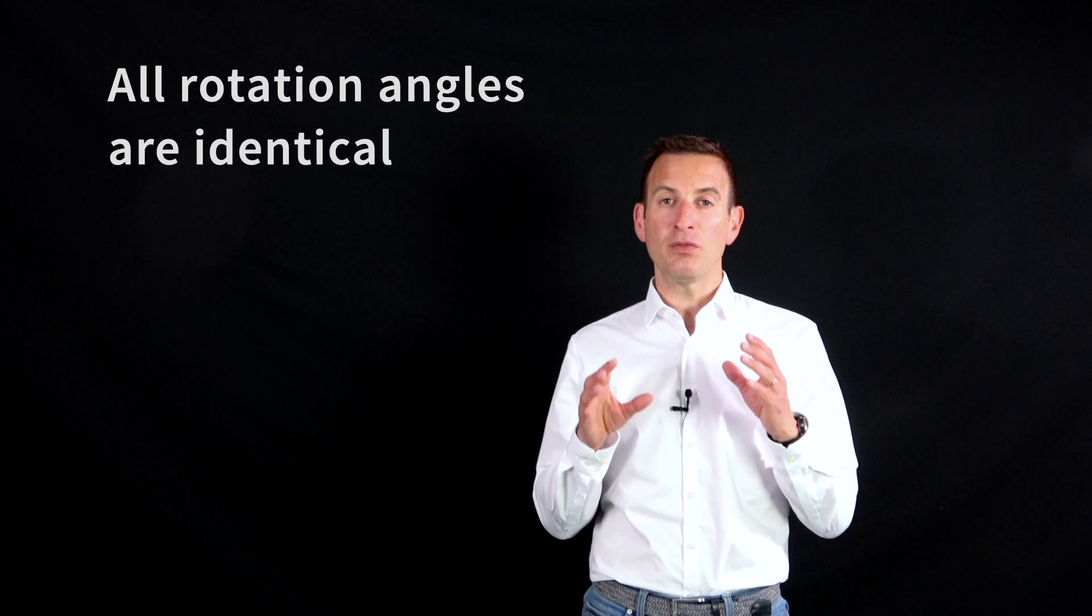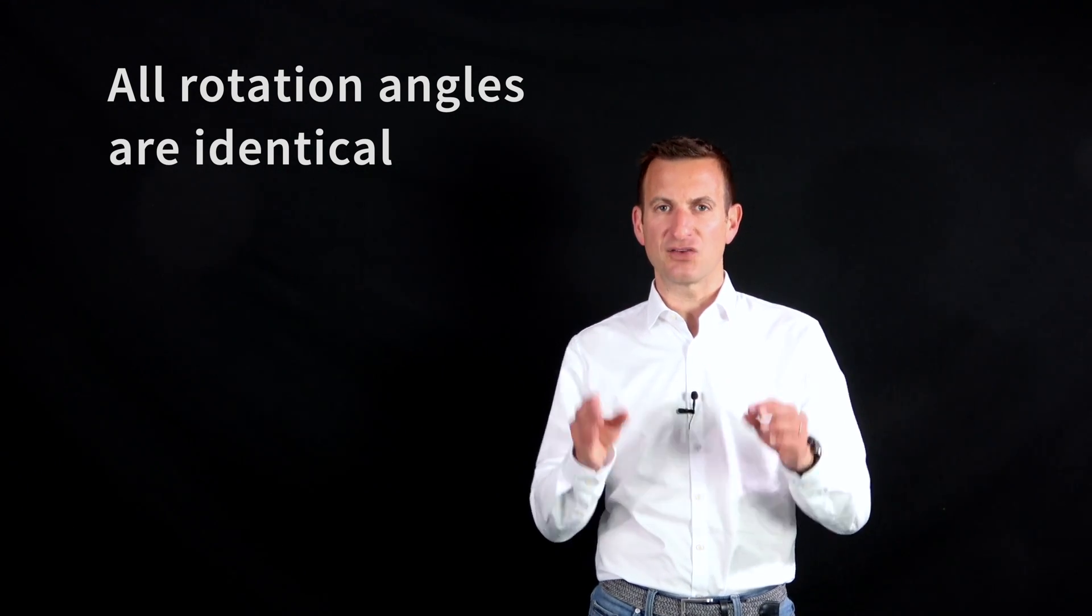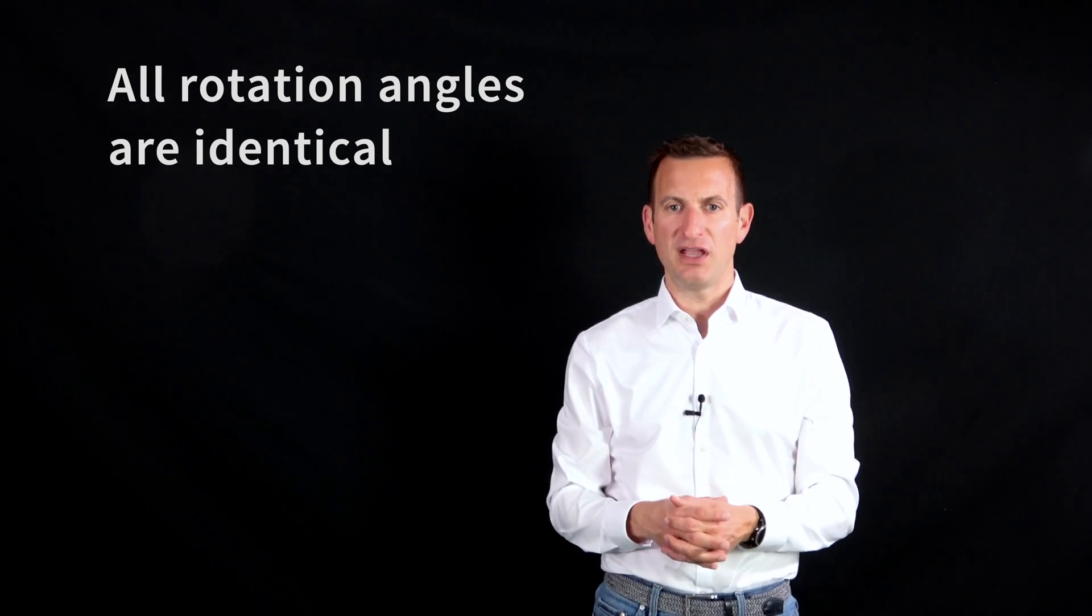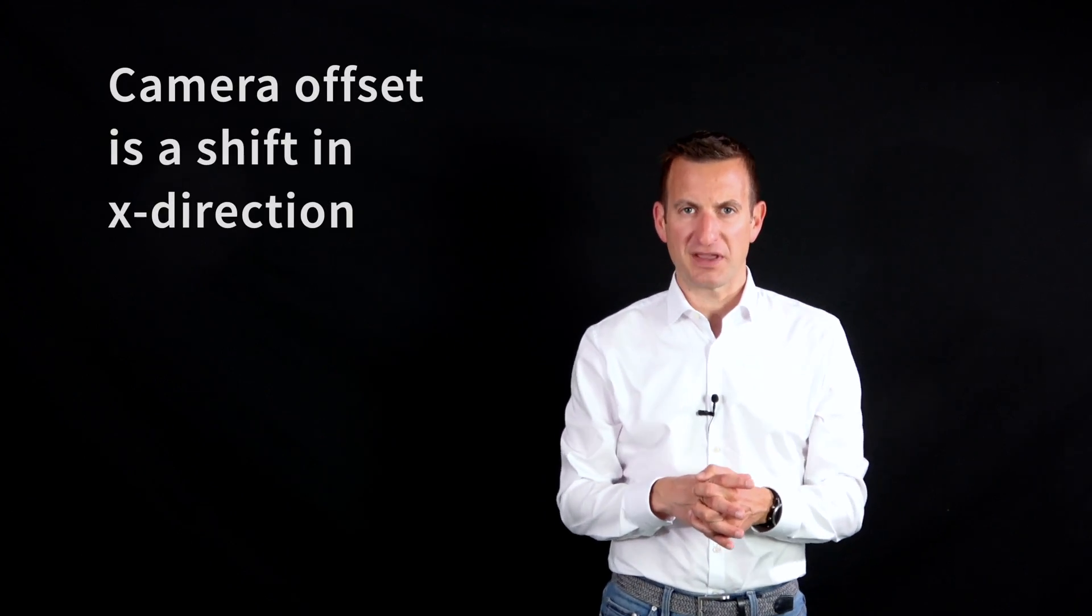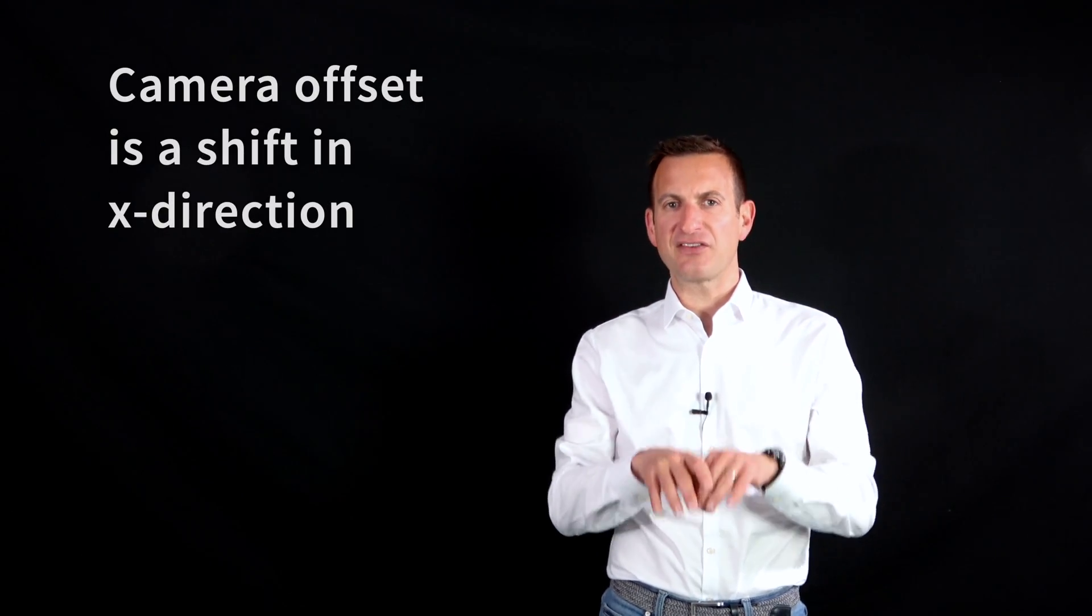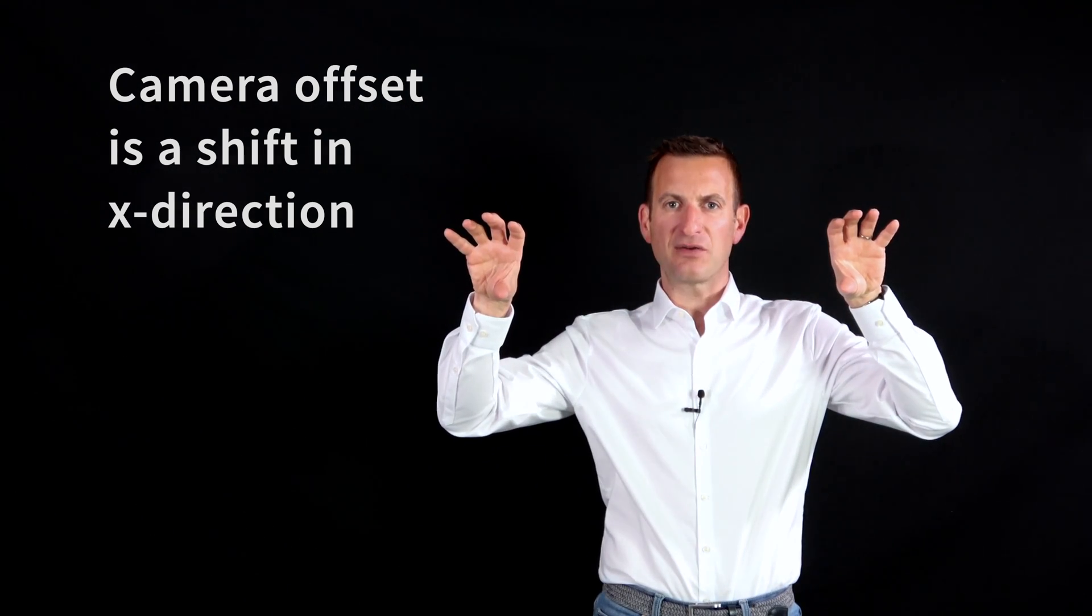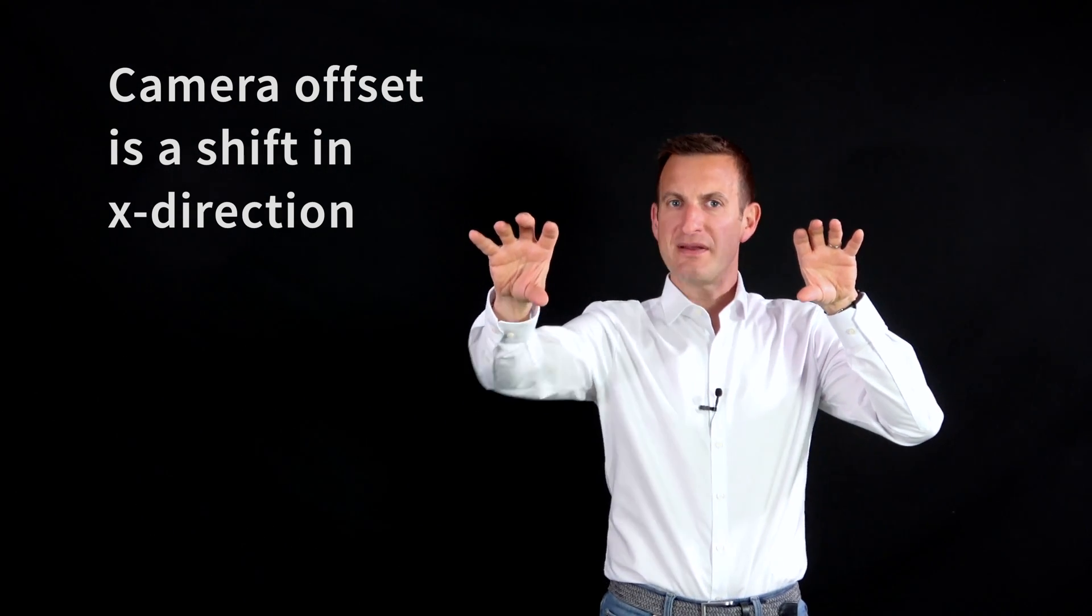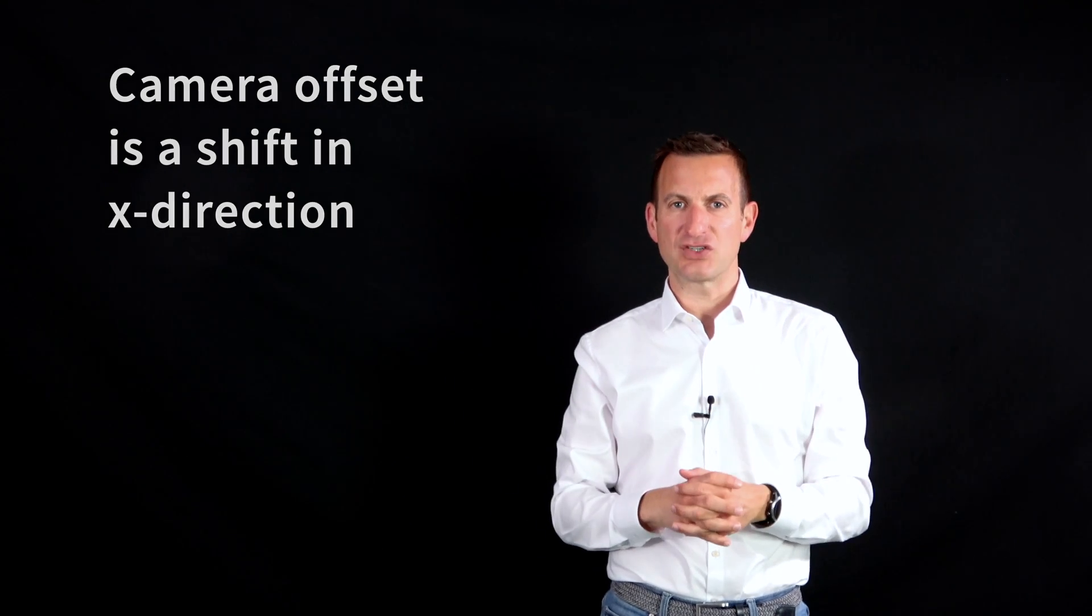The stereo normal case is a very simple geometric configuration. It basically says that the roll, pitch, yaw angle of both cameras are identical, so both cameras look into the same direction. And also the offset of the camera is only an offset in the x-direction, so the cameras are just shifted within the x-direction. There is no change within the z-direction or within the y-direction. So the geometric configuration can be described by a one degree of freedom transformation. It's basically just a shift in the x-direction. So it's a fairly simple configuration.